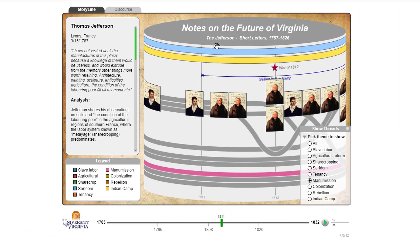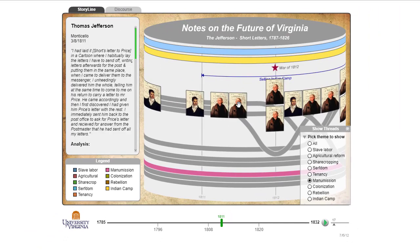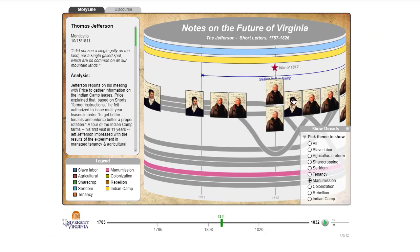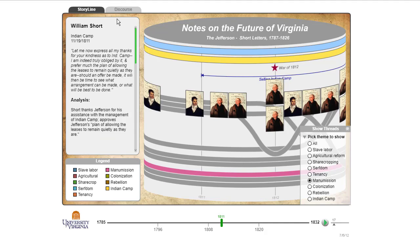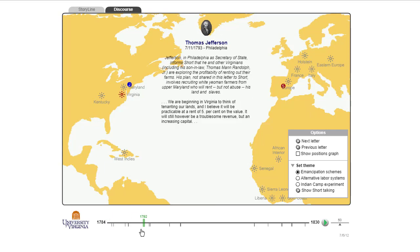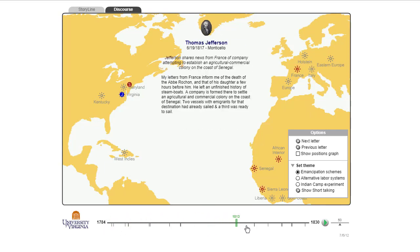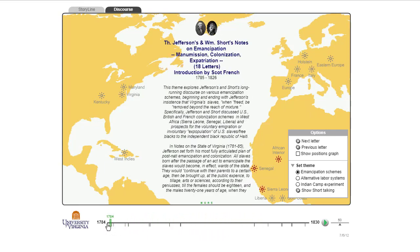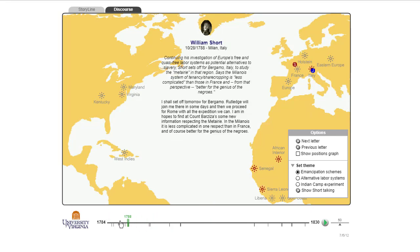So that was interesting, and by looking through it you can kind of parse through the conversation. We also visualized where the discourse came from, because Jefferson and Short were across the Atlantic. You could look through the letters, and each one of these represents a letter, and you can see how it visualized over time.